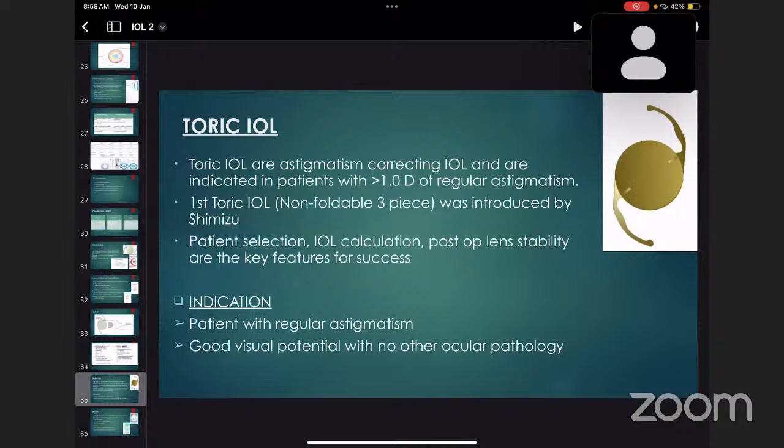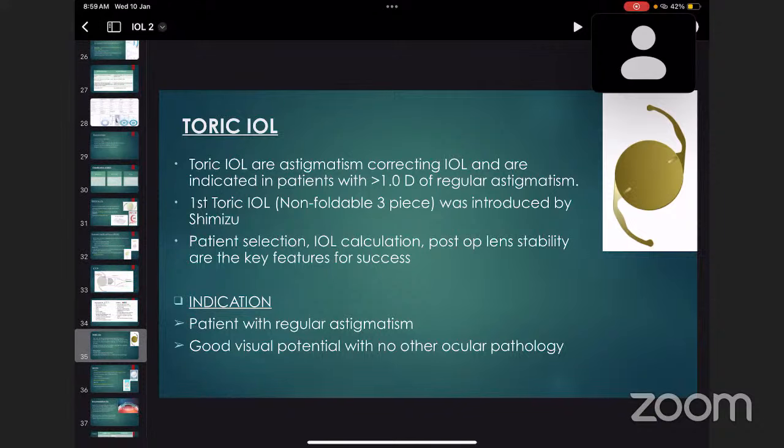Toric IOLs are astigmatism-correcting IOL indicated in patients with more than one diopter of regular astigmatism. First toric IOL was non-foldable three-piece introduced by Shimizu. Patient selection, IOL calculation, and post-op lens stability are key features for success of toric IOL. Mainly indicated in patients with regular astigmatism and good visual potential with no other ocular pathology.